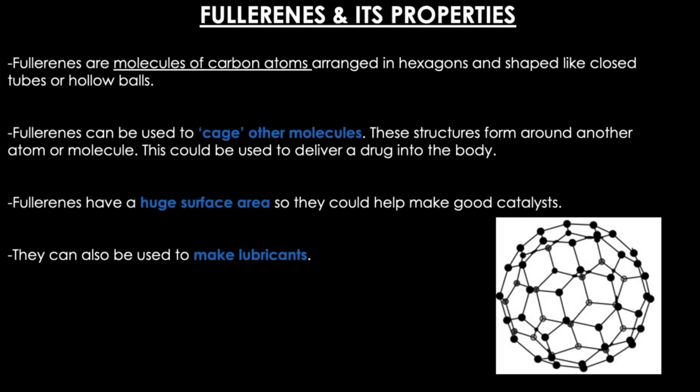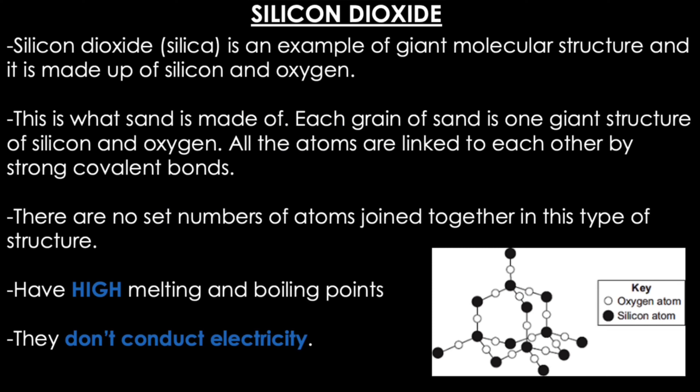Fullerenes are molecules of carbon atoms arranged in hexagons and shaped like closed tubes or hollow balls. Fullerenes can be used to cage other molecules, as these structures form around another atom or molecule — this could be used to deliver a drug into the body. Fullerenes have a huge surface area so they could help make good catalysts, and they can also be used to make lubricants.